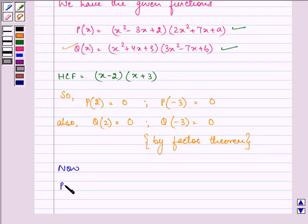Now, let us find out the value of the function P(x) where x is 2. It is coming out to be (4-6+2)(8+14+a).